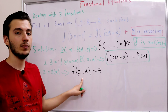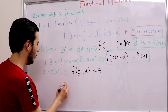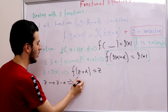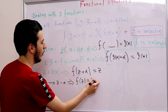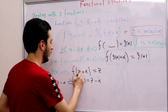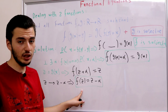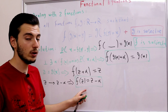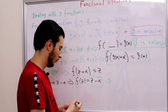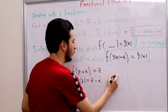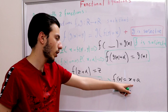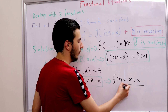We are nearly done. From f(z + α) = z, substituting z with z − α gives f(z) = z − α. This proves that f is linear, specifically f(x) = x + a where a = −α. So we have found f.